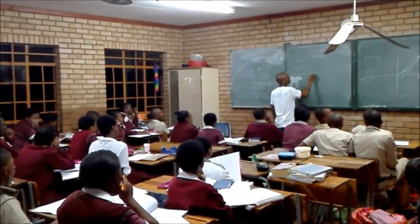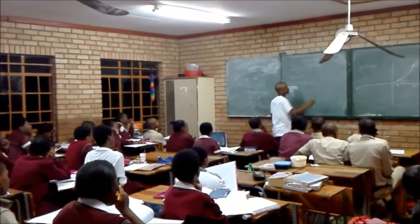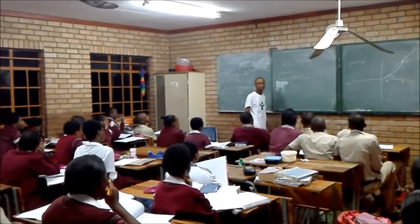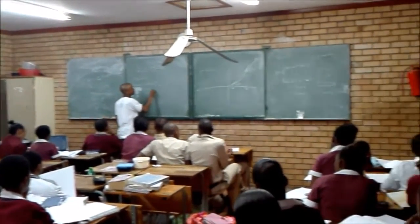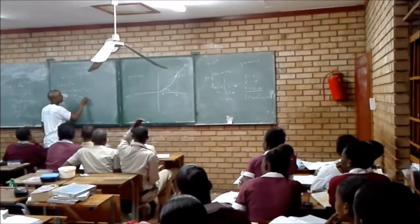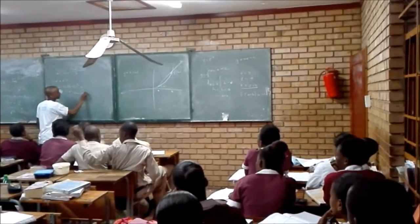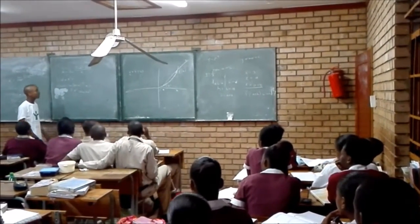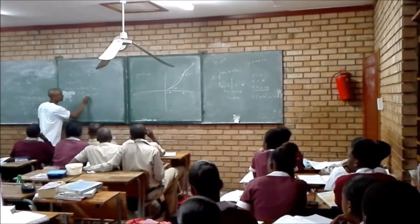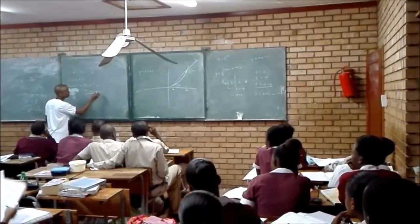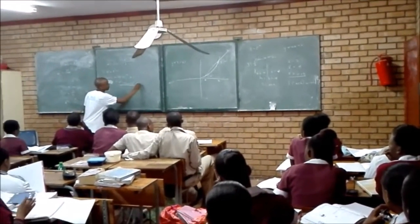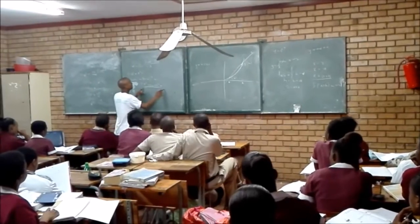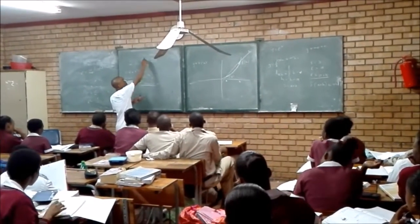I'm going to say x plus h, squared, plus 1, right? This will give you x squared plus 2hx plus h squared, right. You're going to take this whole thing plus 1, and substitute it here.